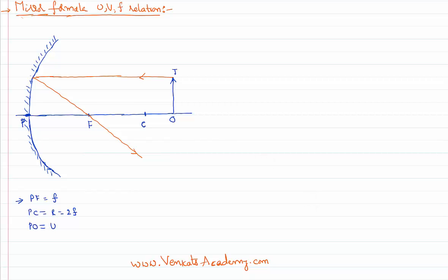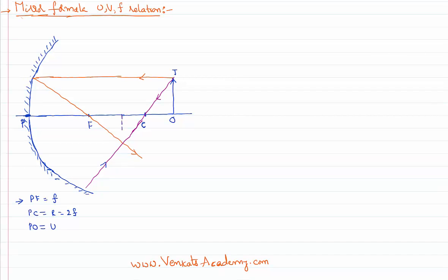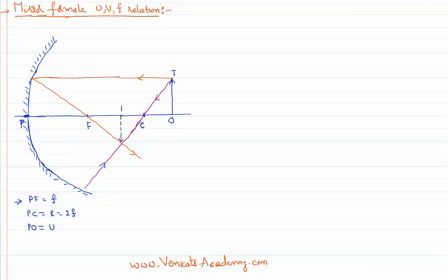There is one more rule. If the light ray passes through the center of curvature from the object and comes and strikes the mirror — let us just extend the mirror so that it can come and strike it — the light ray passing through the center of curvature will retrace its path. You might have noticed these two reflected light rays are meeting at a particular point, and there the image is formed. Let me call the image as IG.